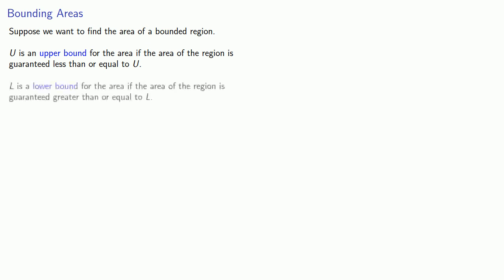Likewise, l is a lower bound for the area if the area of the region is guaranteed greater than or equal to l. The closer u and l are to each other, the more precisely we know the area of the region.